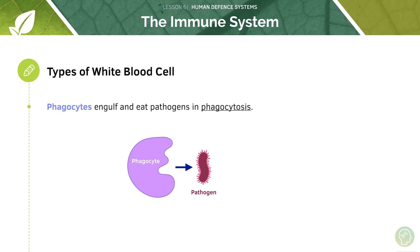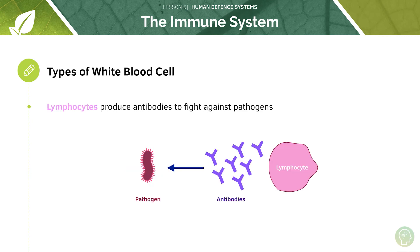Phagocytes can be thought of as the hungry white blood cell, because what they do is engulf and eat pathogens in the process of phagocytosis. A phagocyte carries out phagocytosis, which means it engulfs the pathogen by extending areas of membrane, internalising the pathogen and then degrading it. In contrast, lymphocytes — the second type of white blood cell — produce antibodies that fight against pathogens, for example by neutralising pathogenic toxins.